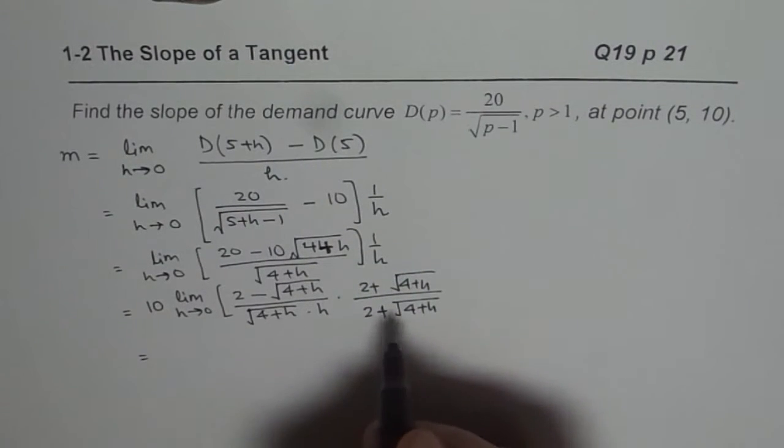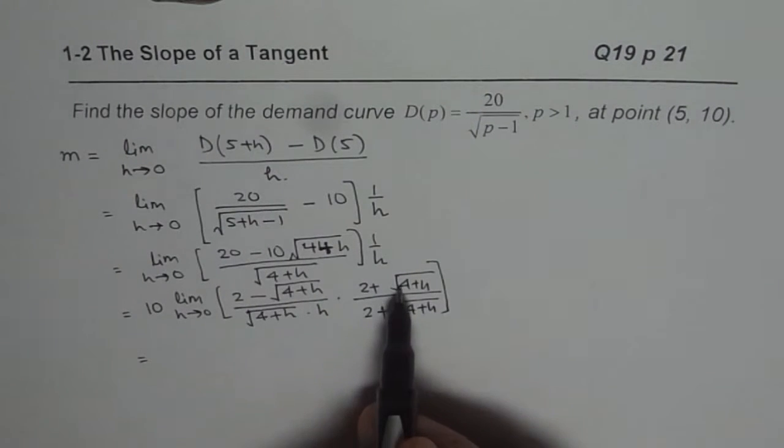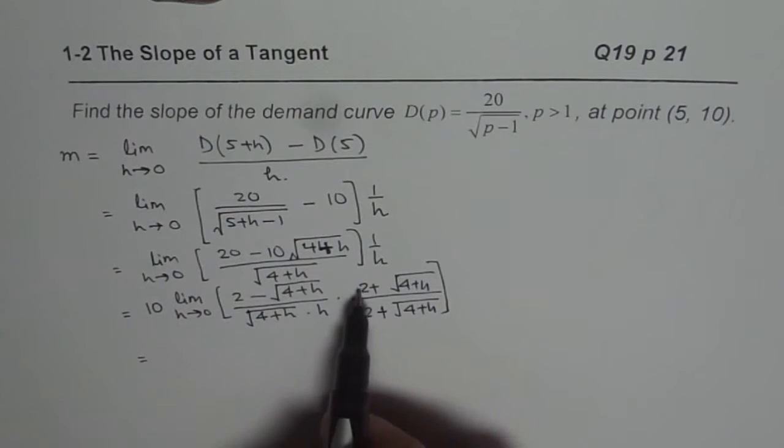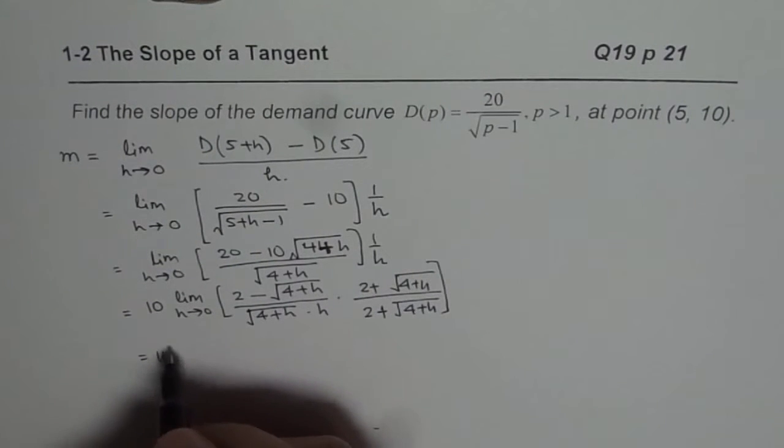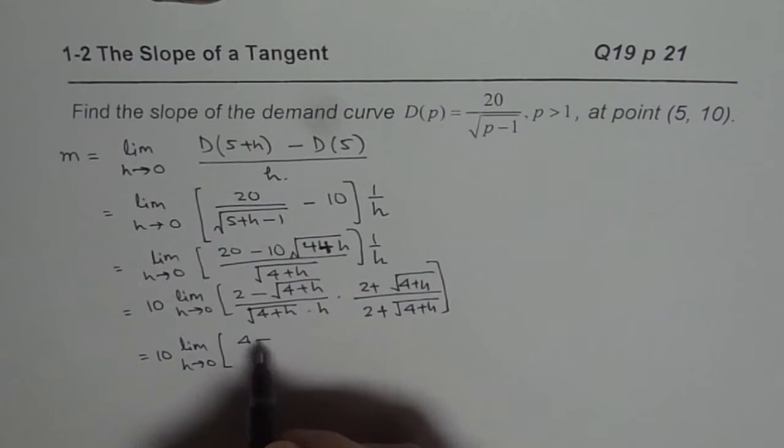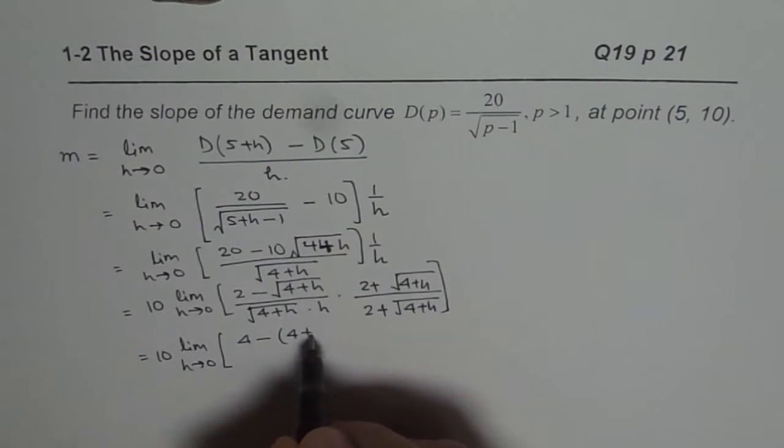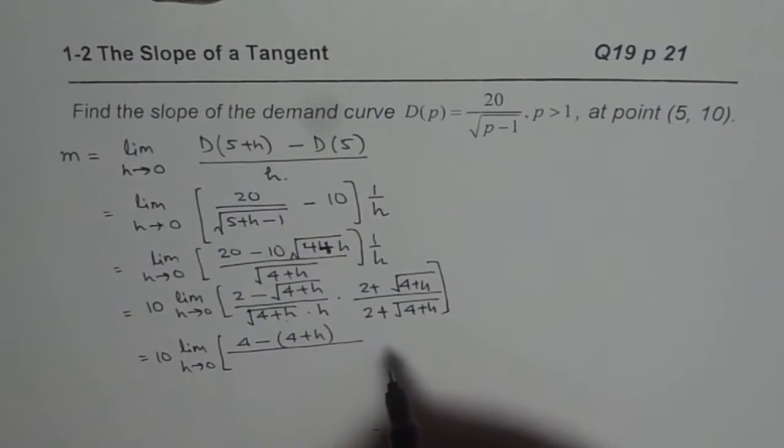Once you rationalize, let me close the bracket. Once you rationalize, the numerator could be written as 2 square minus square root of 4 plus H squared. Now we get limit H approaches 0, and here we have 2 square is 4, minus 4 plus H. That is the numerator.